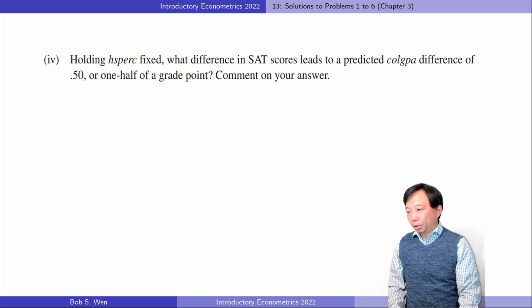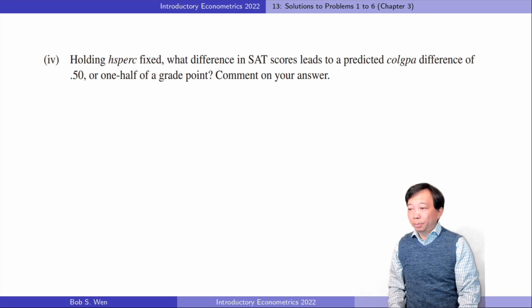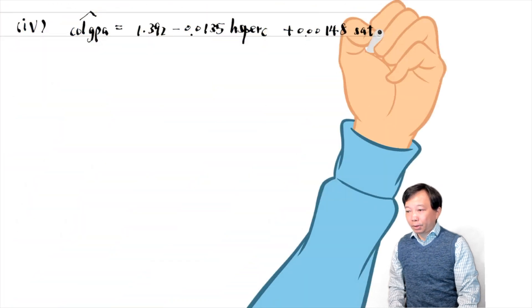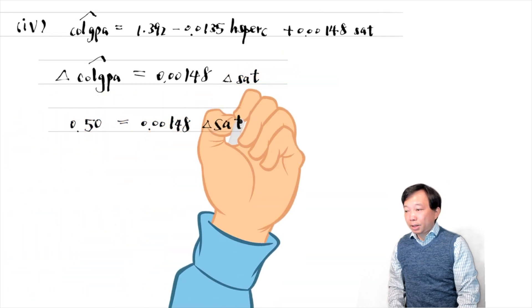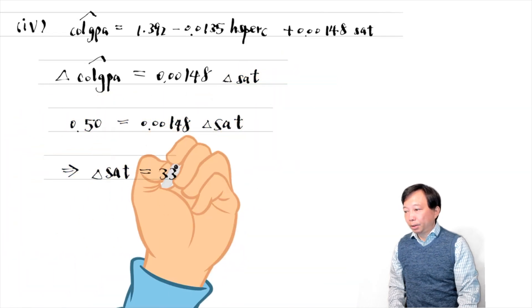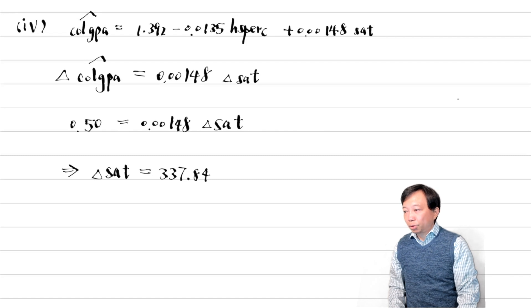For the fourth question, holding the high school percentile constant, the difference in college GPA comes from the difference in SAT scores. About 338 points difference in SAT scores leads to a predicted college GPA difference of 0.5.